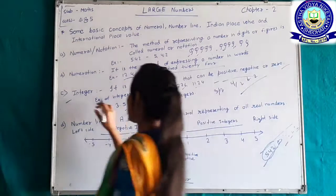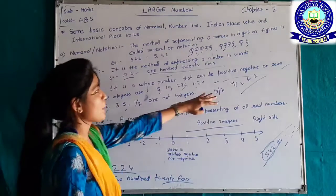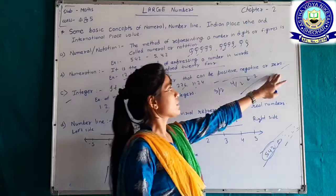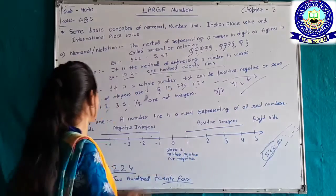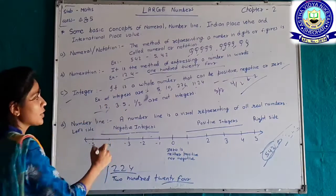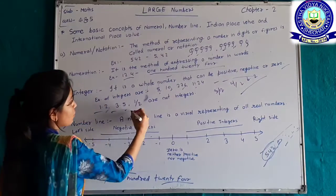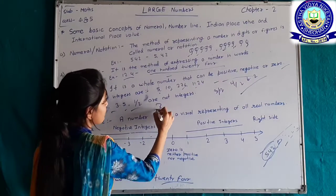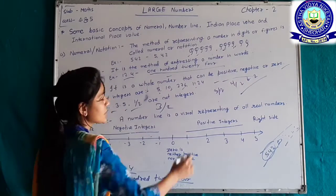So an integer is a whole number that can be positive, negative, or zero — but not fractions or decimals like 1.2, 3.2, 1/2, or 3/2.